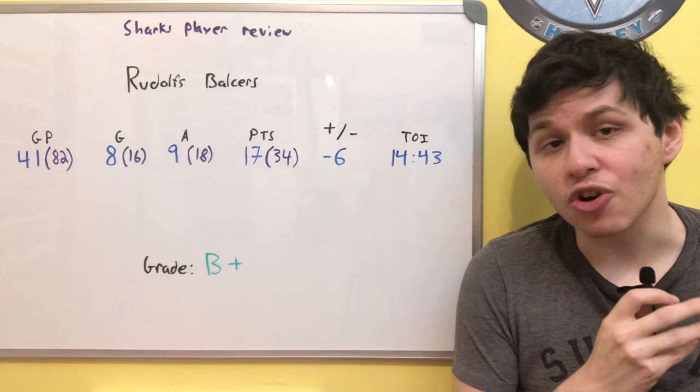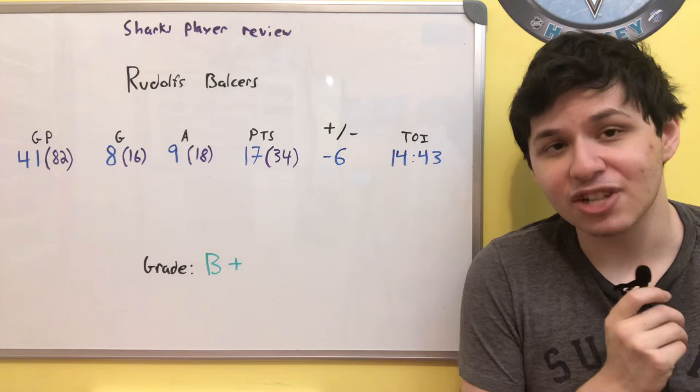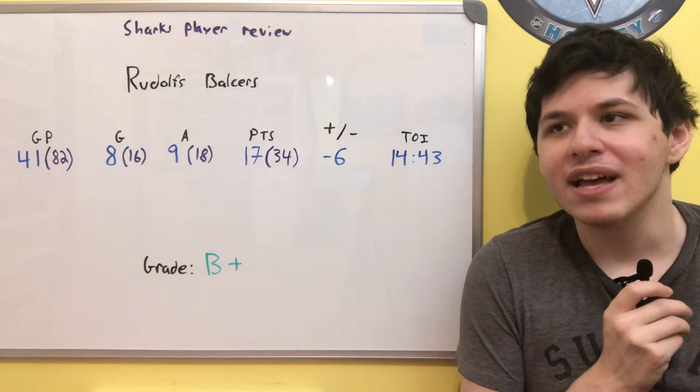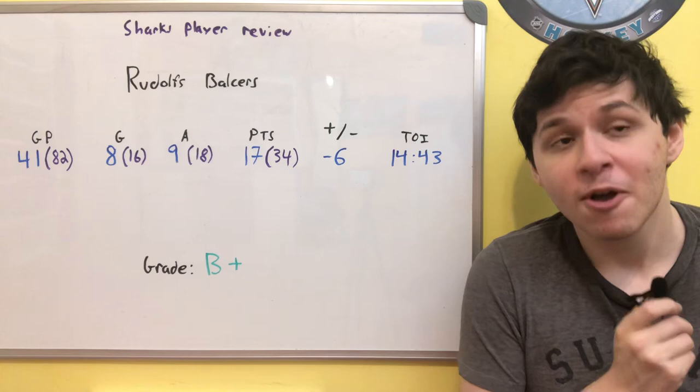But in this season, while he did start off on that third line, he actually managed to earn Bob Boughner's trust rather quickly and moved himself up in the lineup to the second and even at times first line, playing with players like Logan Couture. And that's just how good Balcers was at times. He seemed to have all of the correct intangibles to be able to play at a high level. He wasn't necessarily an extremely skilled player, which was why 34 points over an 82-game season ended up being the case for him.